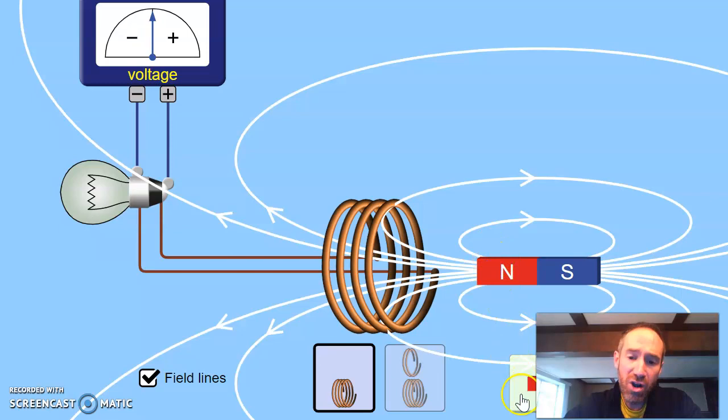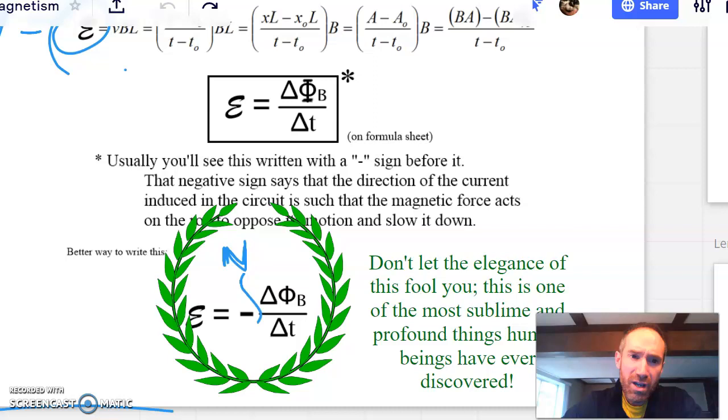Notice something that whenever I go from the north being close to the south being close, I get a voltage that's, they're calling it positive. And whenever I do the opposite, I get a voltage that's being called negative. Now, all of that is very good.